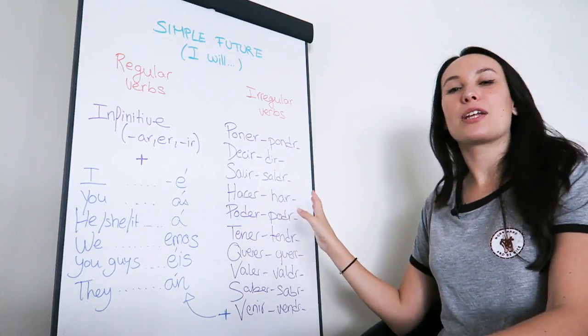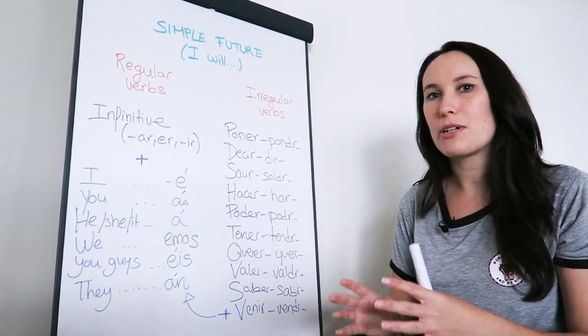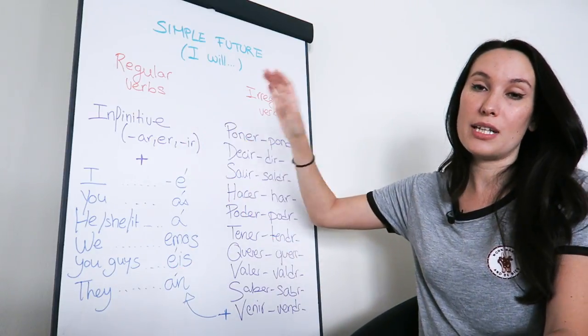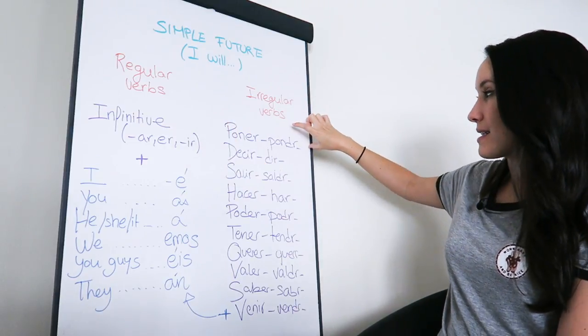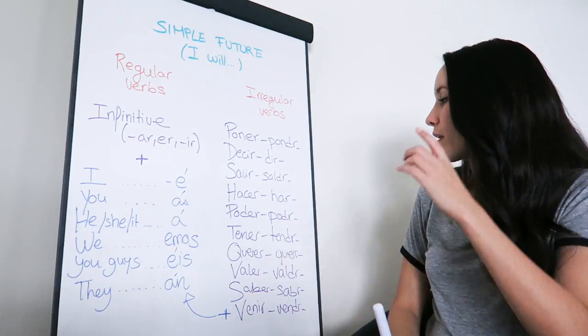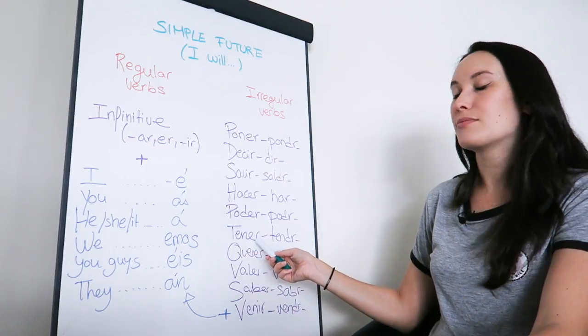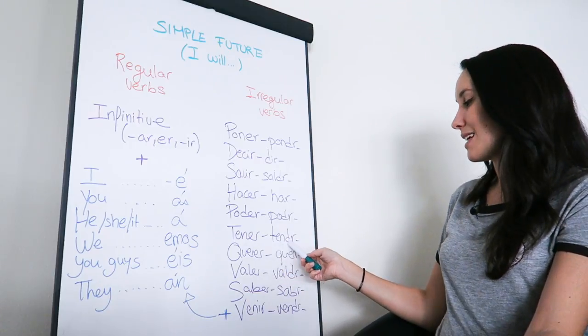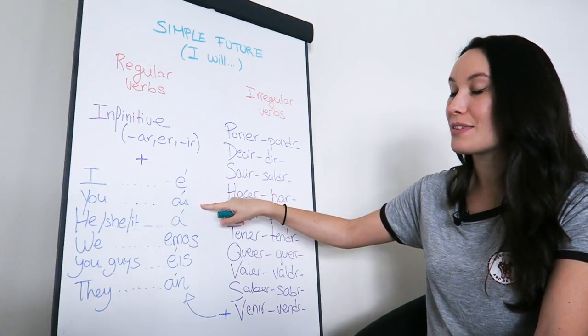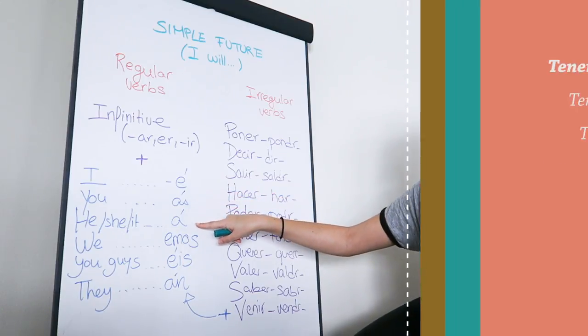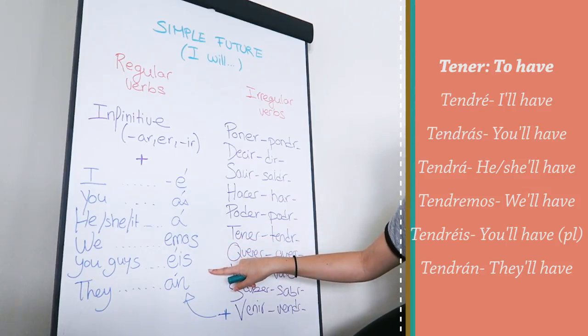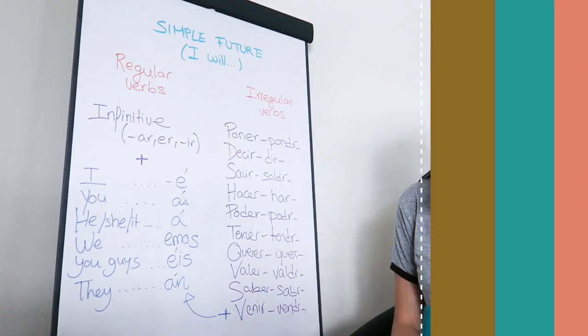So with the irregular ones, it's pretty much the same. I'm going to use the endings the same way, but I'm not going to use the infinitive as the base. The base is this irregular form that we are already given. For example, with tener, to have, the irregular form is tendré. So I can say tendré, I will have, tendrás, you will have, tendrá, he or she will have, tendremos, we will have, tendréis, you guys will have, and tendrán, they will have.